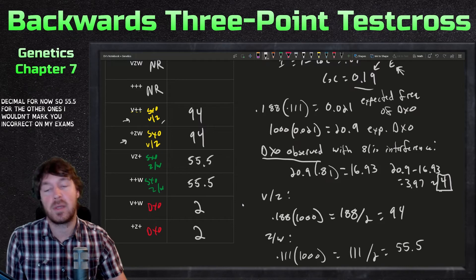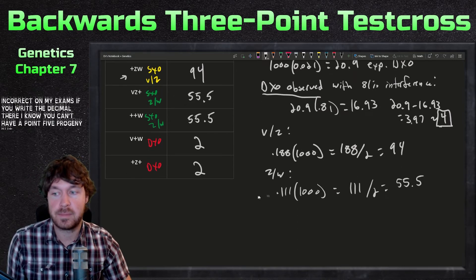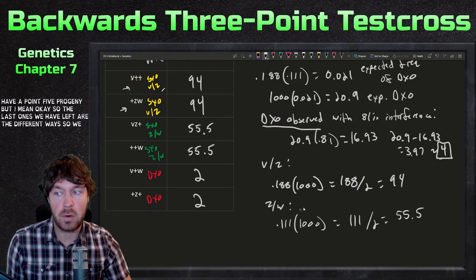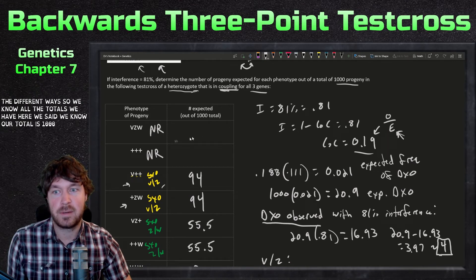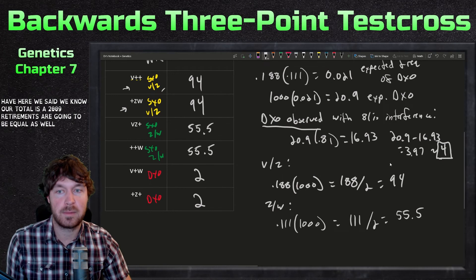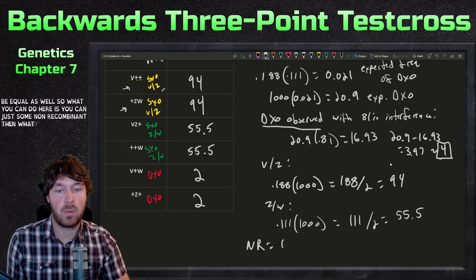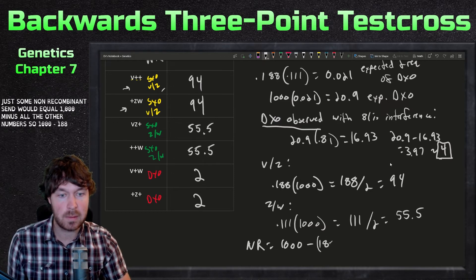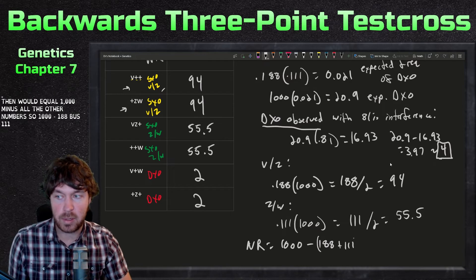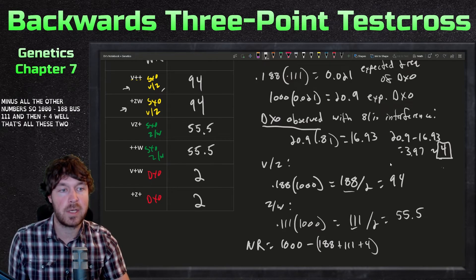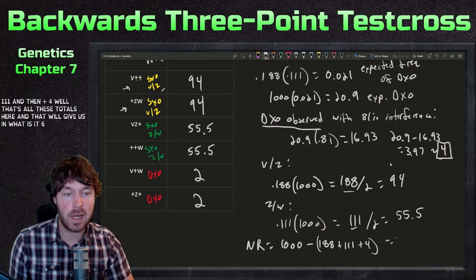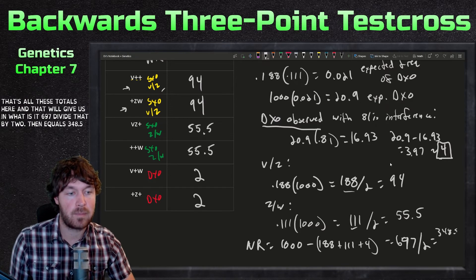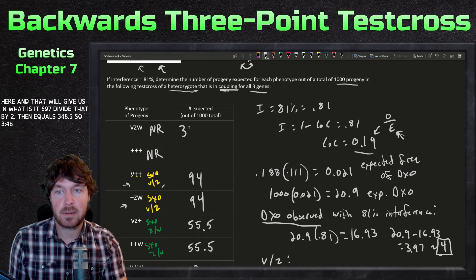Finally, for the non-recombinants, we subtract all other classes from 1,000. That's 1,000 − (188 + 111 + 4) = 697. Dividing by two for the two non-recombinant classes gives 348.5 each. So our non-recombinants are 348.5 for each parental class.